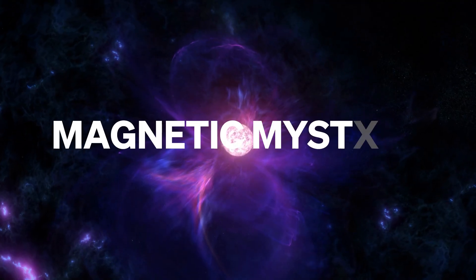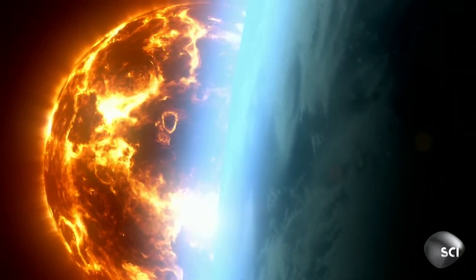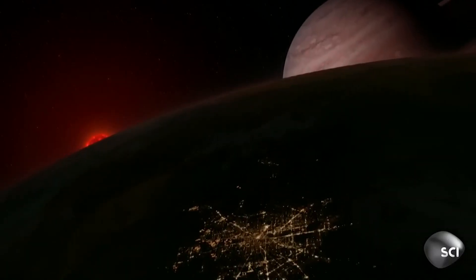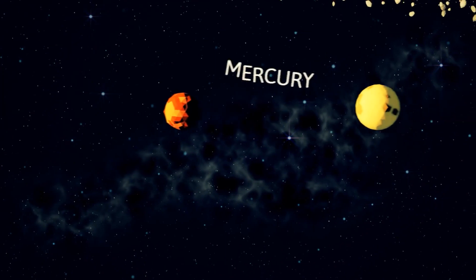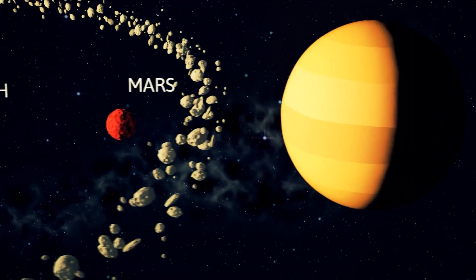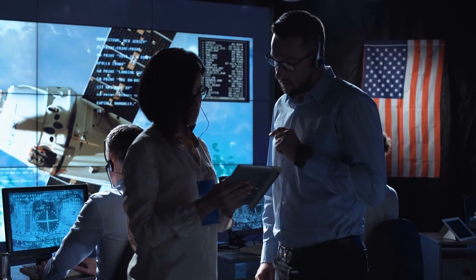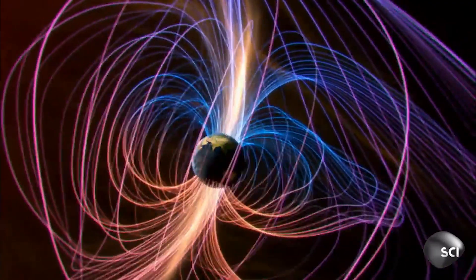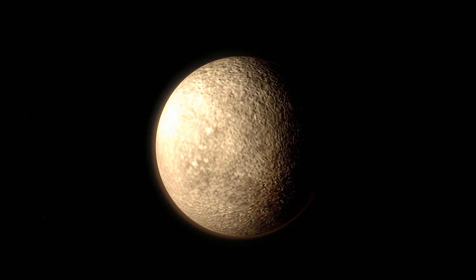Magnetic mystery. At 1.1 percent the strength of Earth's, Mercury's magnetic field is one of the most intriguing aspects of this mysterious planet. What makes it truly astonishing is the fact that it was completely unexpected. Given Mercury's relatively small size compared to other planets like Earth, scientists initially didn't anticipate it having a magnetic field. The presence of a magnetic field on such a diminutive world challenges our fundamental understanding of planetary magnetism.